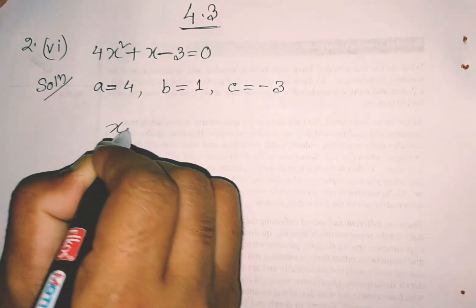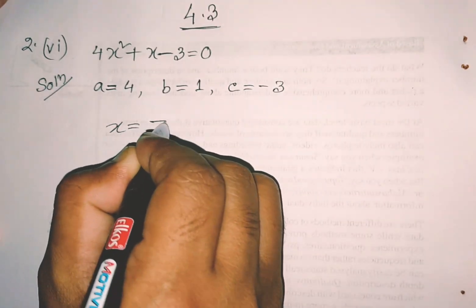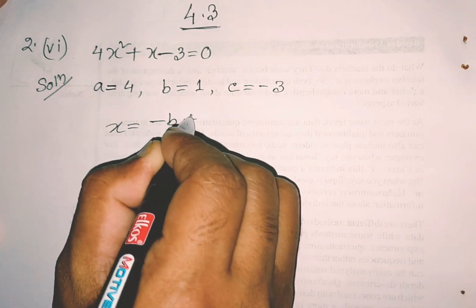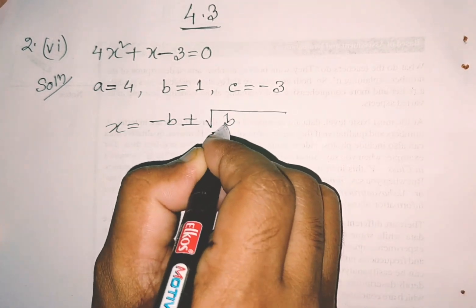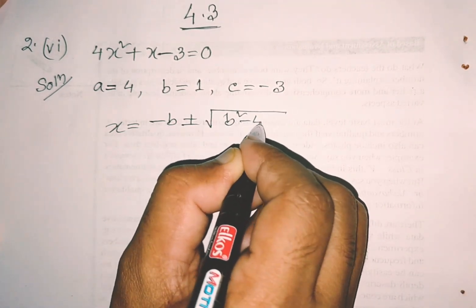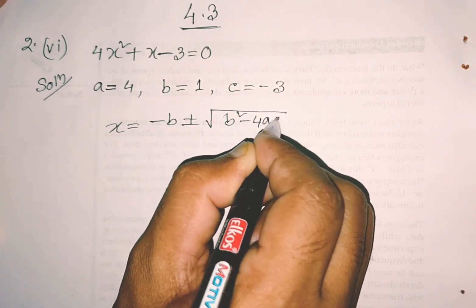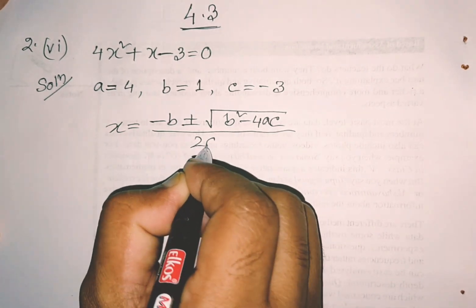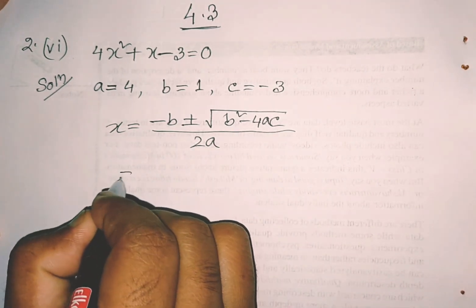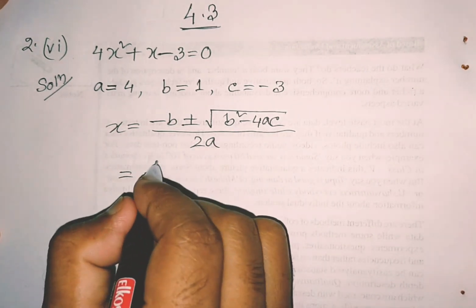x is equal to: we have to write minus b plus or minus root over b square minus 4ac, divided by twice a. Now let us substitute into the formula.